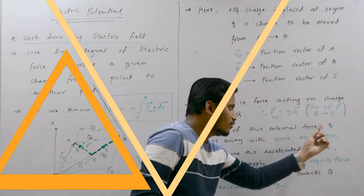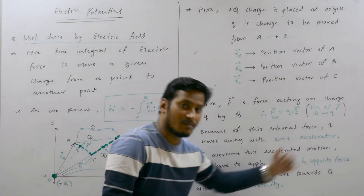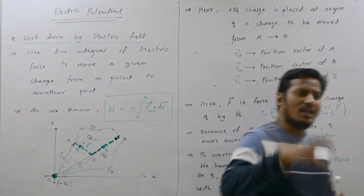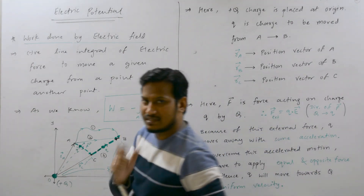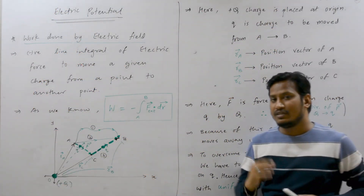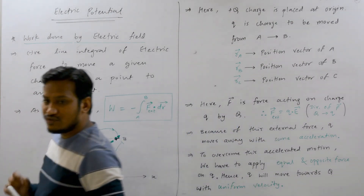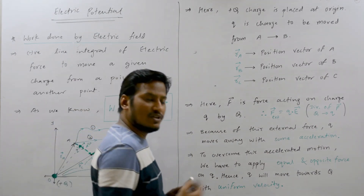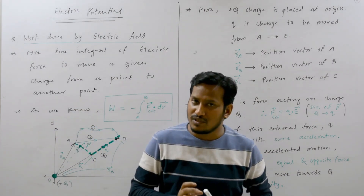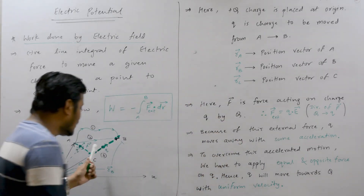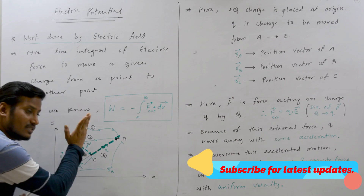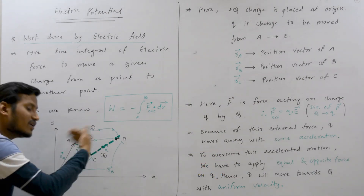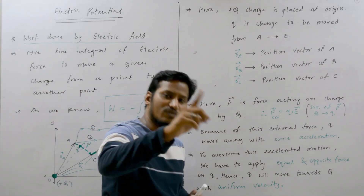Because of this external force, charge q moves away with some acceleration. As seen in mechanical systems, if a force acts on a body, that body moves with some acceleration. The force acting on small q is in the outward direction. To overcome this acceleration, we apply an equal and opposing force in the inward direction, so the charge moves with uniform velocity.